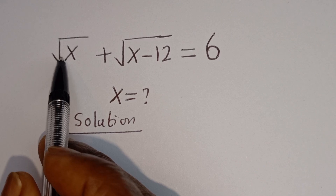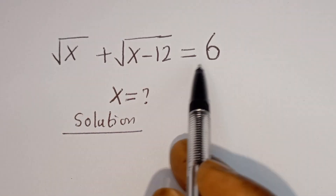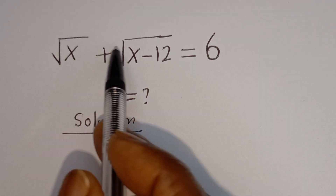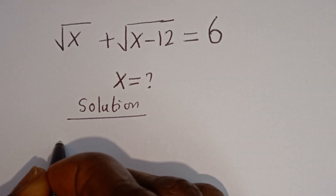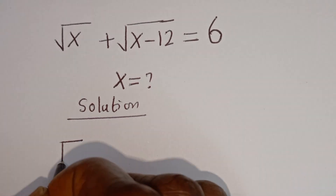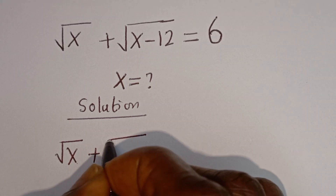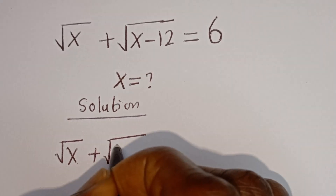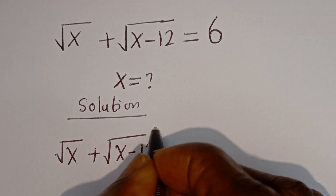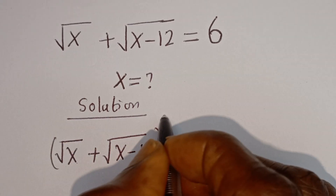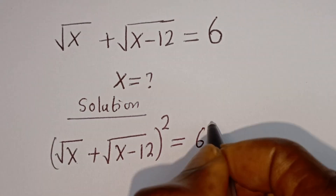From here we have square root of x plus square root of x minus 12 which is equal to 6. Let's square both sides of this equation: square root of x plus square root of x minus 12, all squared, is equal to 6 squared.